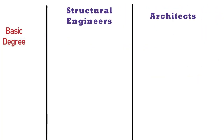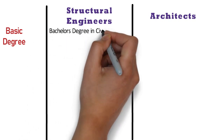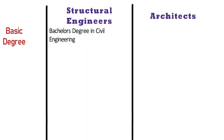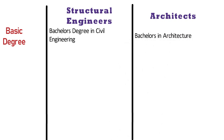Basic Degree: The education of structural engineers is usually through a civil engineering bachelor's degree. Whereas the basic degree required to become an architect is a bachelor's in architecture.